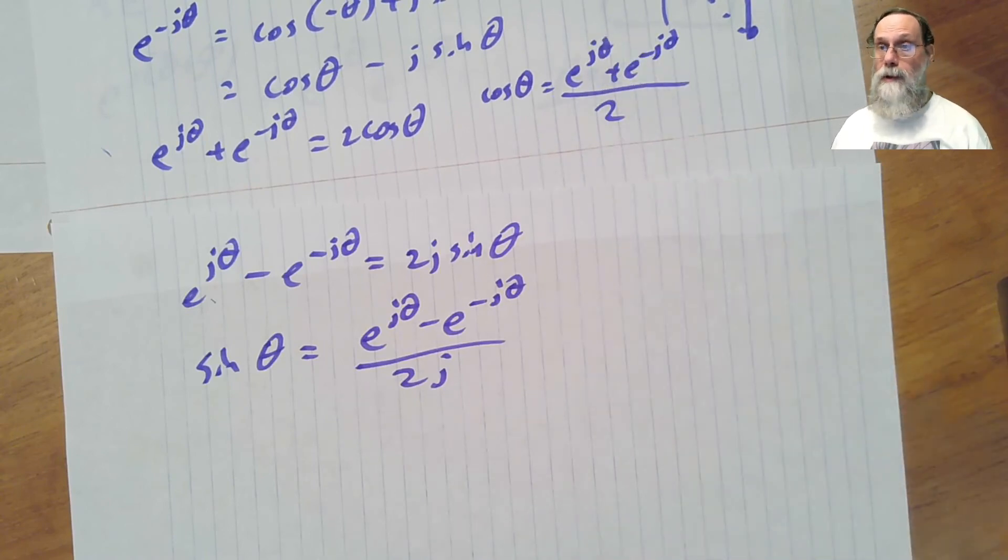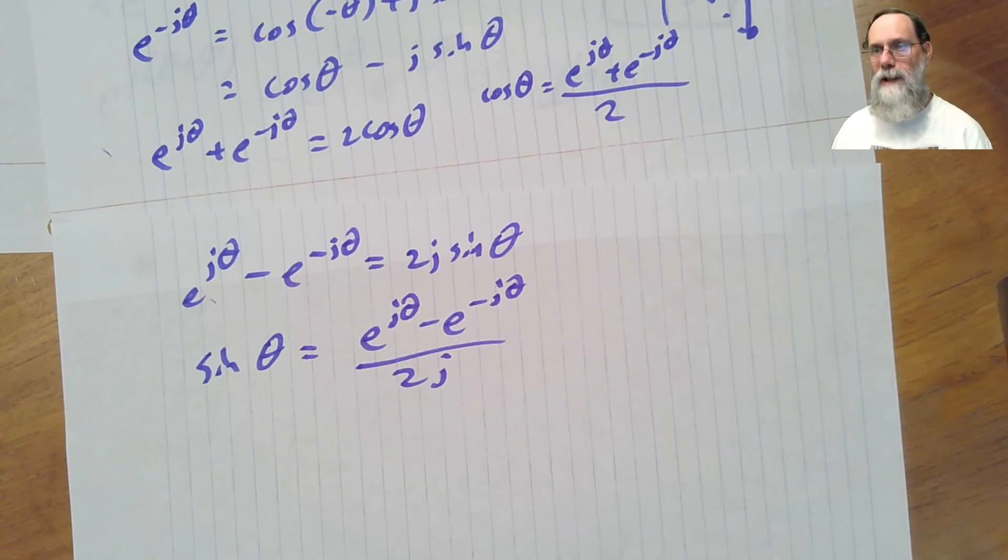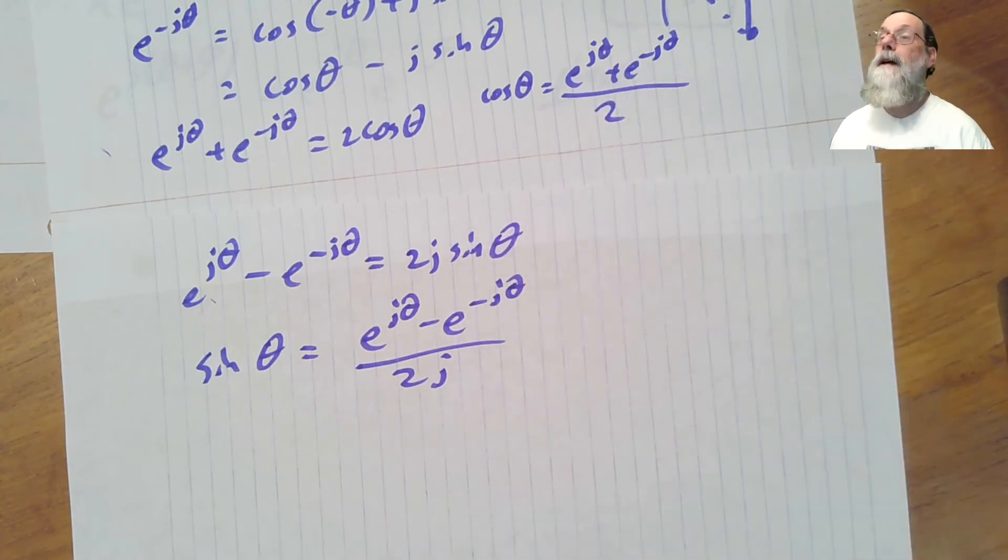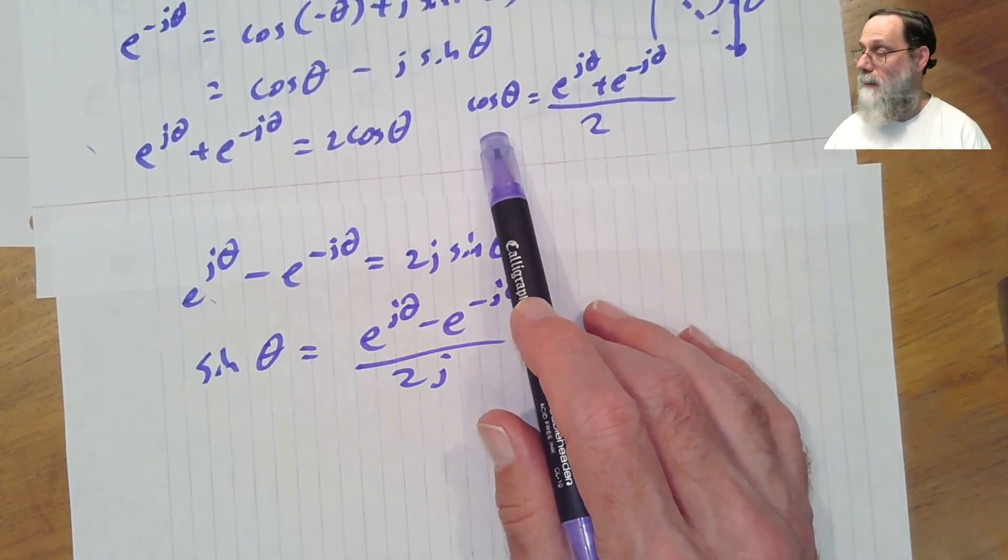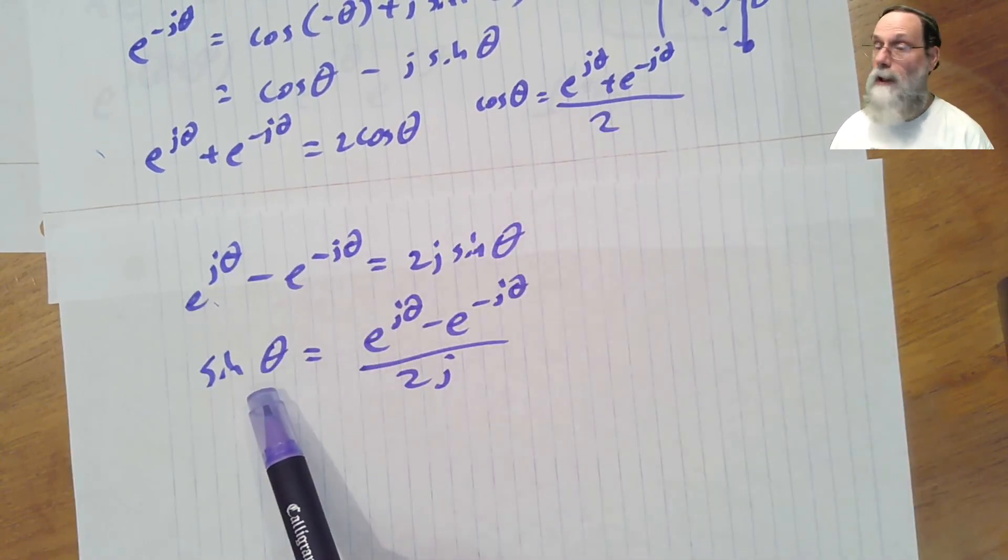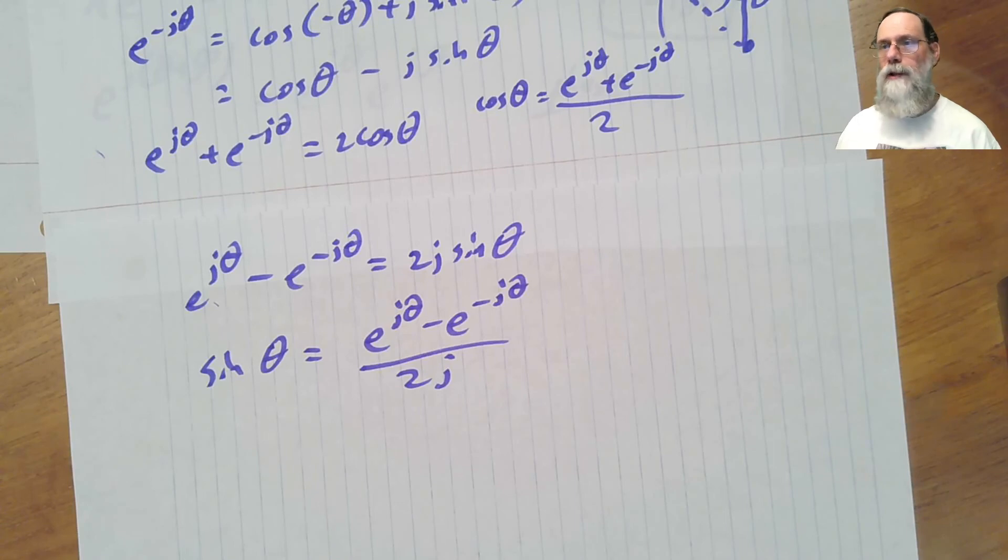When we're dealing with linear systems, the output of a linear system, by definition of a linear system, is if you add a bunch of things together, multiply them by constants, you're going to get the output, the outputs added together in the same way, multiplied by the same constants. So if we want to see what a linear system does to cosine theta, we can figure out by figuring out what it does to e to the j theta. And similarly, if we want to know what it does to sine theta, we can figure out by what does it do to e to the j theta. And so that allows us to do all of our analysis of what does our linear systems do just in terms of what do they do to exponentials.